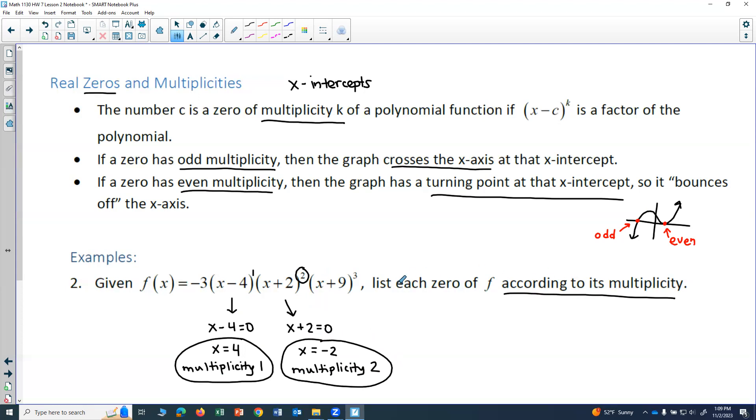And now this third factor over here, I'll take my x plus 9, set it equal to 0, and solve for x. So I get x equal to negative 9.